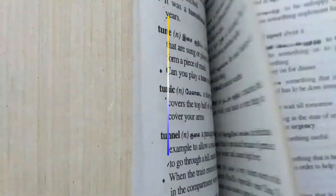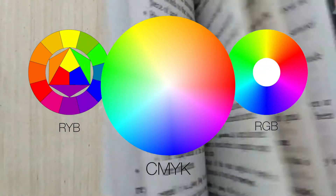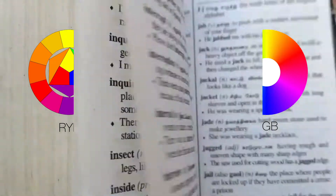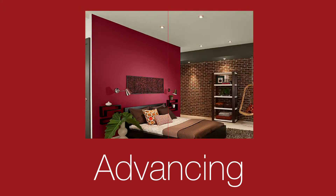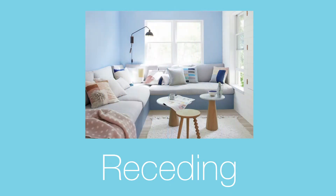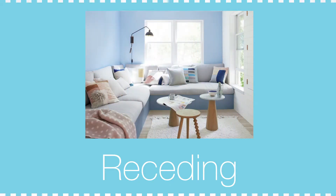Regardless of what colour wheel you use, there are some basic concepts and terms you must know. Warm colours on any colour wheel are described as advancing colours — they appear to be coming towards you, or can make spaces feel smaller. Cool colours on any colour wheel are described as receding colours — objects will appear further away, or spaces will feel bigger.